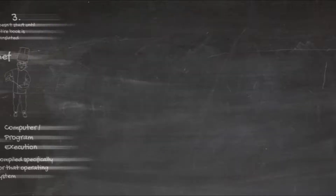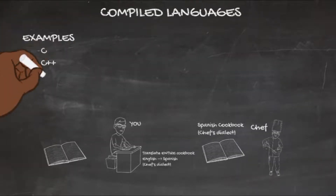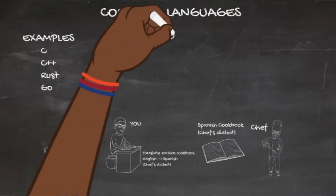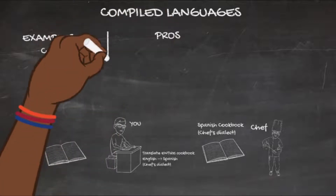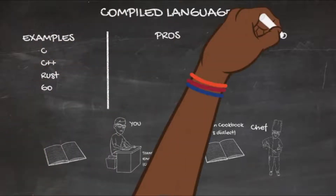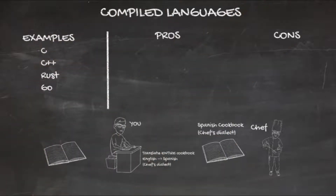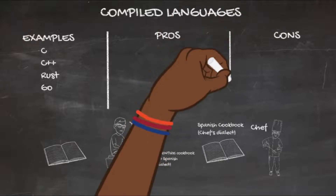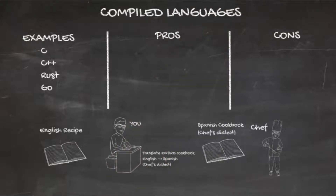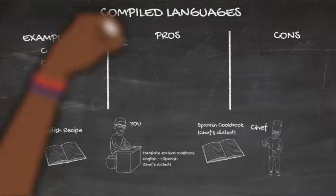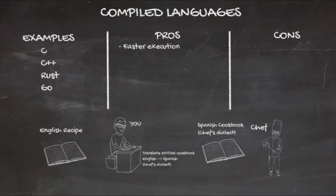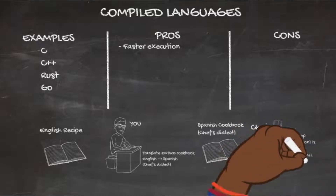There are plenty of compiled languages out there. As with any programming language or technology, there are always pros and cons. One of the most well-known benefits of compiled languages is faster execution time versus an interpreted language, because all of the code is translated before the computer attempts to execute it.